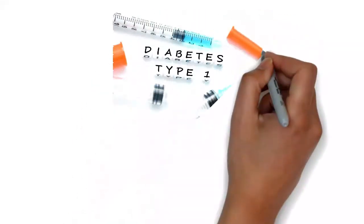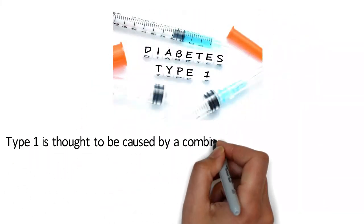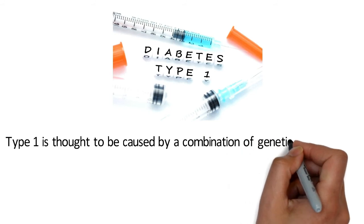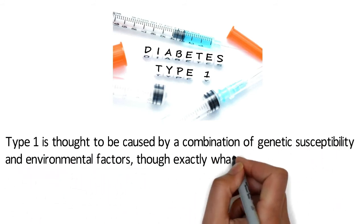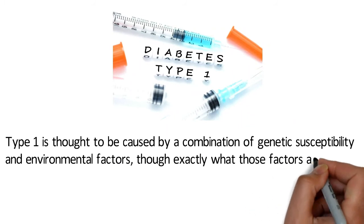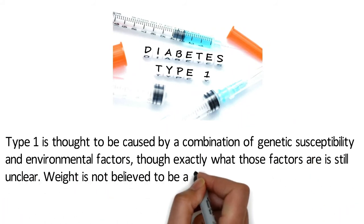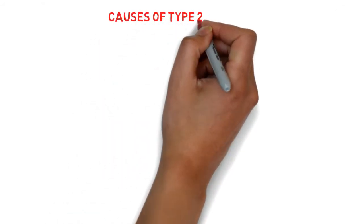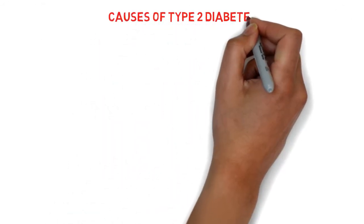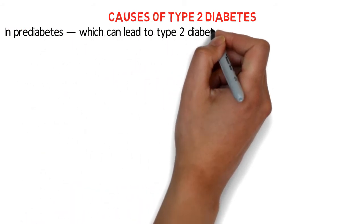Causes of type 1 diabetes: type 1 is thought to be caused by a combination of genetic susceptibility and environmental factors, though exactly what those factors are is still unclear. Weight is not believed to be a factor in type 1 diabetes.